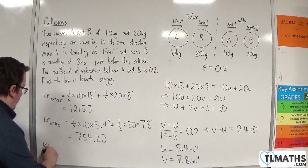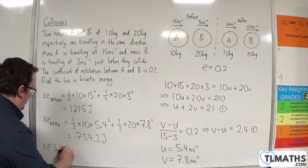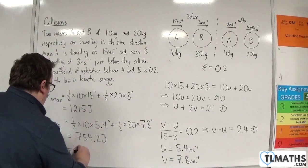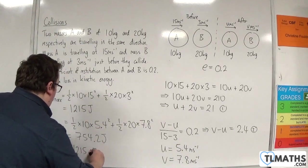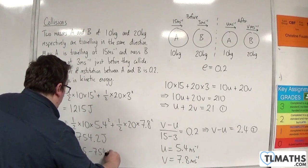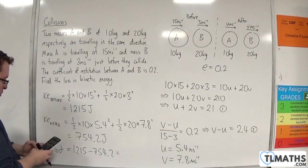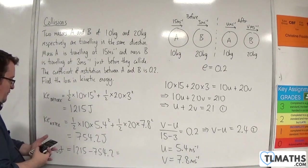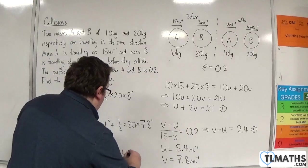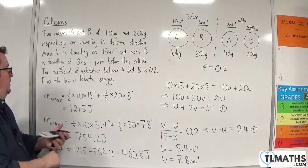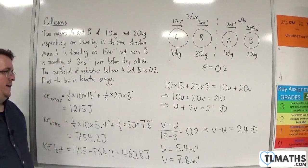So the kinetic energy lost in the collision will be 1,215 take away 754.2. So 1,215 take away 754.2, and we get 460.8 joules. So that is the loss in kinetic energy.